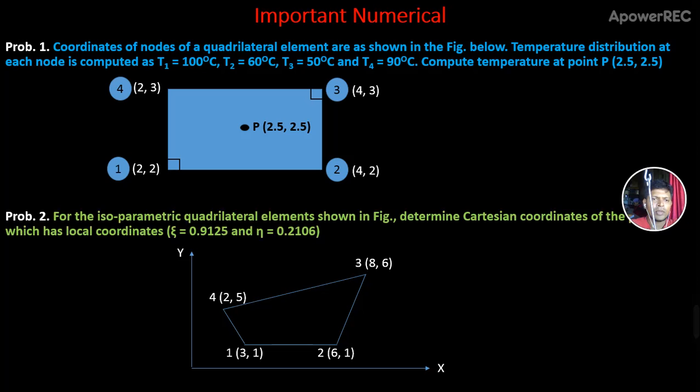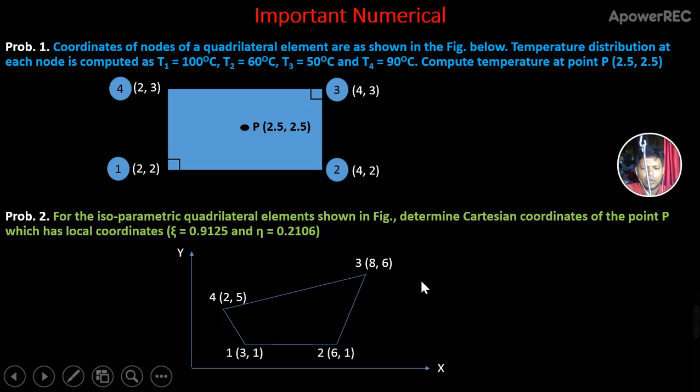Question 2: You need to determine Cartesian coordinates of point P which has local coordinates. Your figure is given for question number 2.